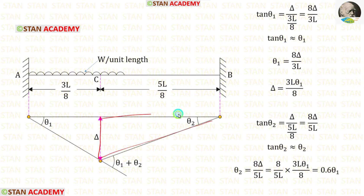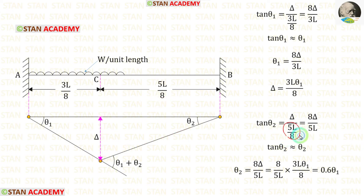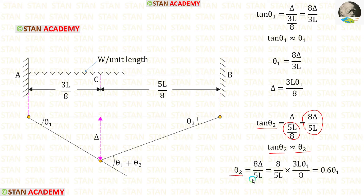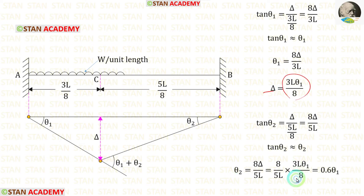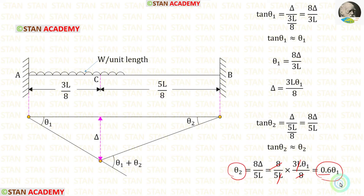Taking the right triangle: tan(theta2) = delta / (5L/8), which gives tan(theta2) = 8·delta/(5L). Since theta2 is small, theta2 ≈ 8·delta/(5L). Substituting delta = 3L·theta1/8, we eliminate terms and get theta2 = 0.6·theta1.